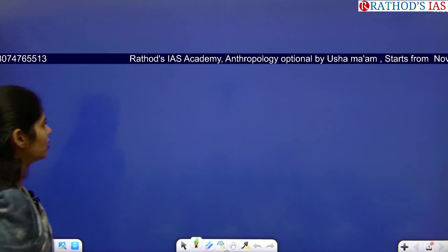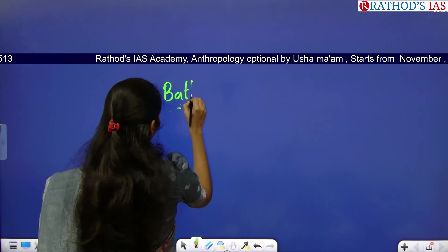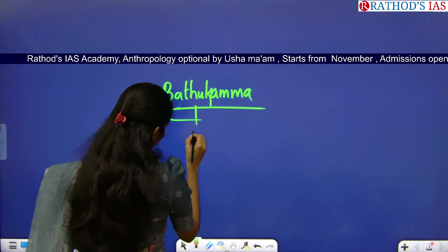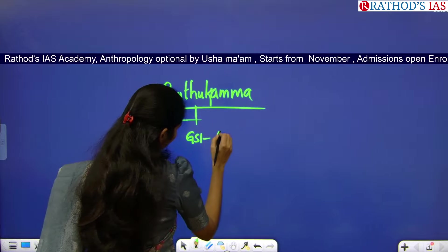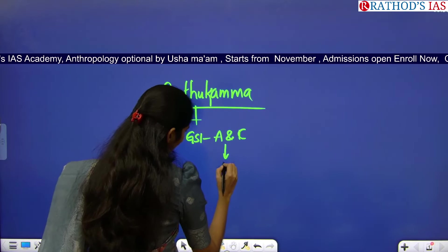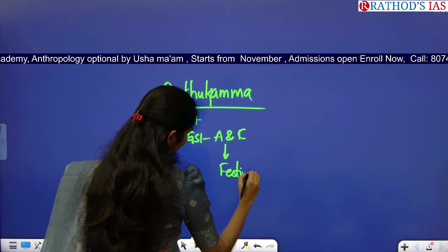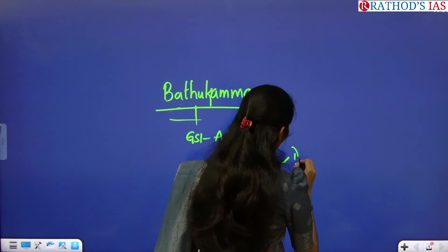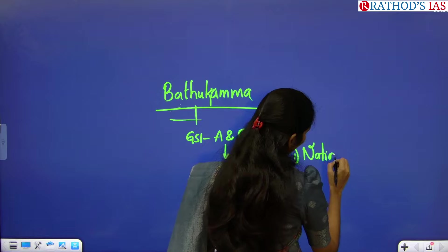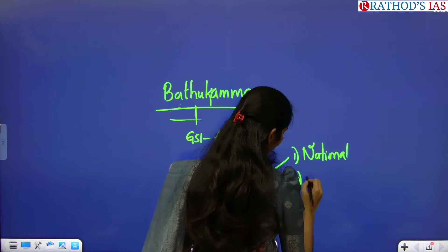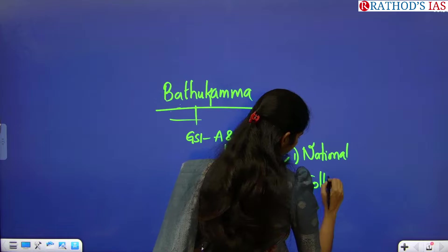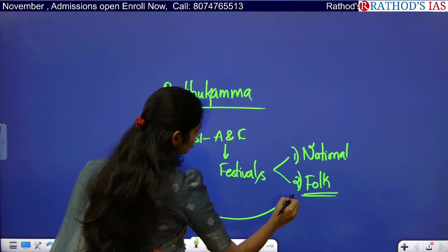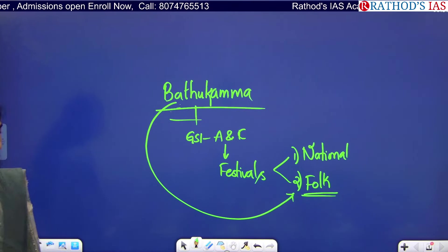Here is how you can get a question. In GS Paper 1 under Art and Culture, we have a topic called festivals. We have two types of festivals: national festivals, which are celebrated nationwide, and folk festivals, which are state-specific. Bathukamma belongs to the folk festival category in the state of Telangana.